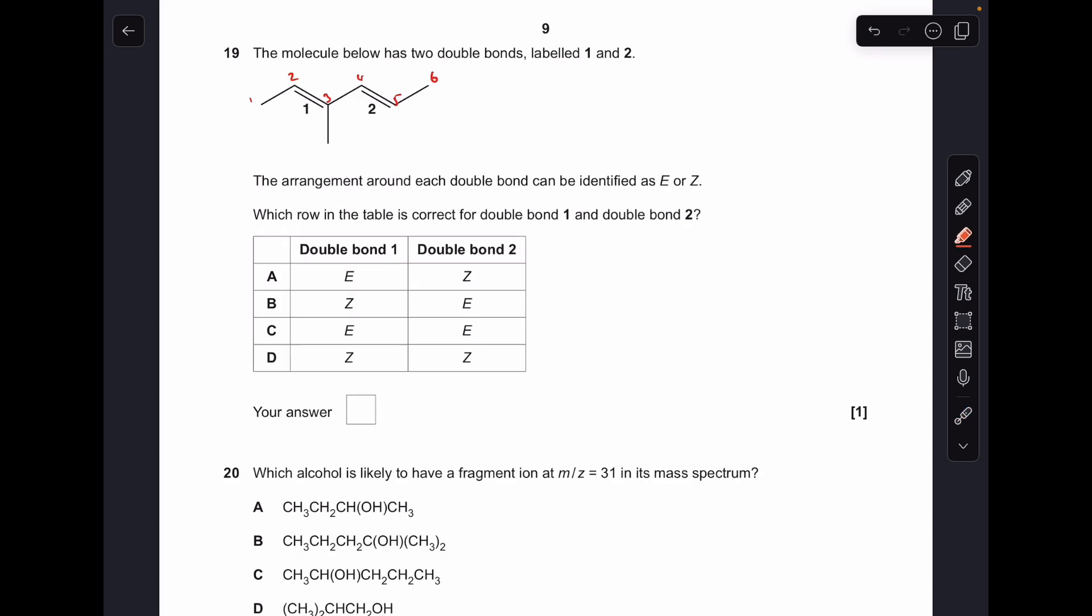Moving on to 19. So I've just numbered the carbons in this just to help my explanation, to be honest. So first thing I've got to do is establish priority on each of the carbons of the double bond. So on carbon-2, we've got a methyl group and a hydrogen. Methyl group has priority there. And then on carbon-3, we've got a methyl group, and then we've got this bigger group, more complex group. So that's got priority on carbon-3. So that's in the E formation, which means we can rule out B and D straight away.